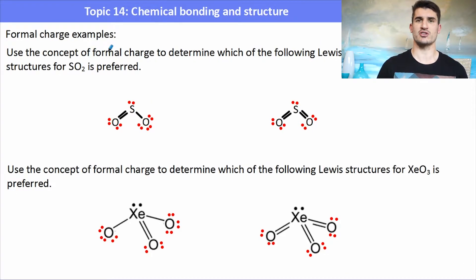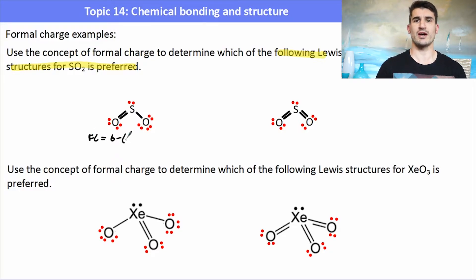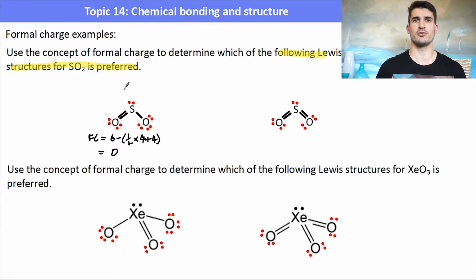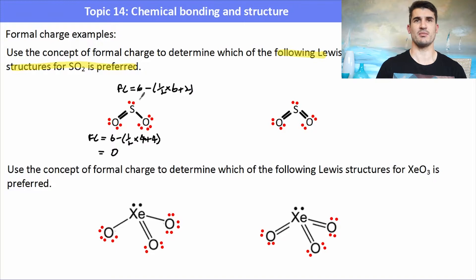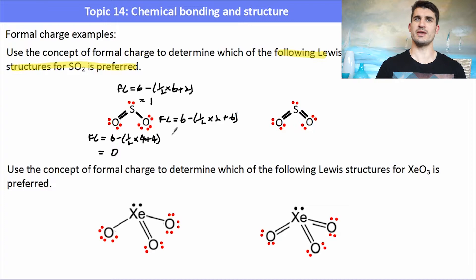You might be asked to use the concept of formal charge to determine which of the following Lewis structures for a certain compound is preferred. Here we have SO2, so again we need to go through and find the formal charge of each atom in the molecule. For the first oxygen, it has six valence electrons, take away a half times the number of bonding electrons plus the number of lone pairs, which gives us zero. The sulfur has six valence electrons — we take that away from the number of bonding electrons multiplied by a half plus the number of lone pairs. The other oxygen has a different formal charge, giving us negative one.